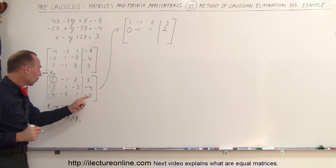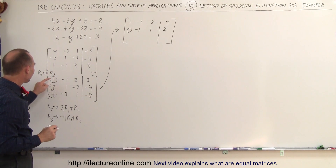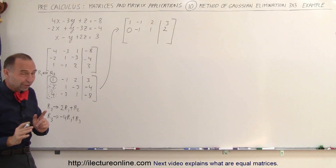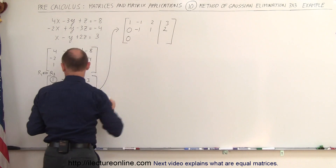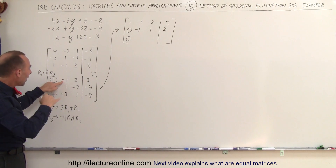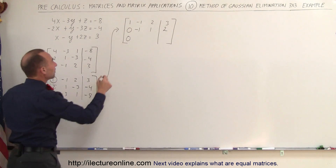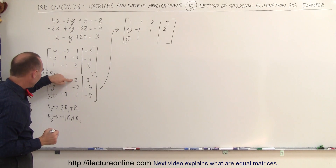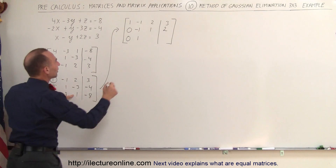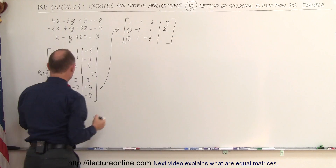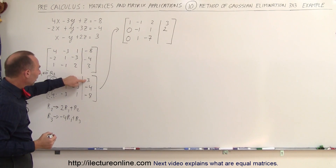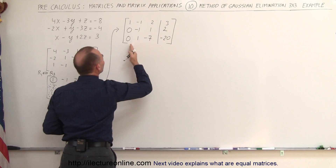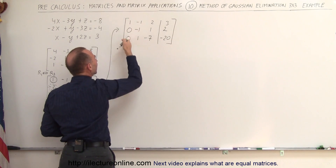Next we deal with the third row. We take negative 4 times the first row: negative 4 times 1 is negative 4, added to 4 gives 0. Negative 4 times negative 1 is positive 4, added to negative 3 gives positive 1. Negative 4 times 2 is negative 8, added to 1 is negative 7. And negative 4 times 3 is negative 12, added to negative 8 gives negative 20. So now we're done with the first column — we have a 1 and two zeros.